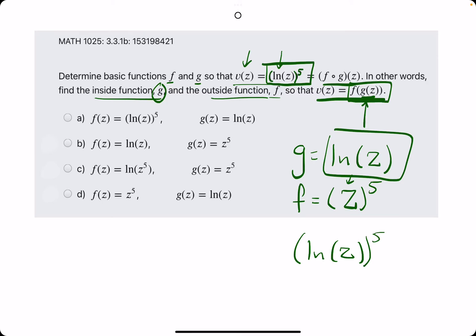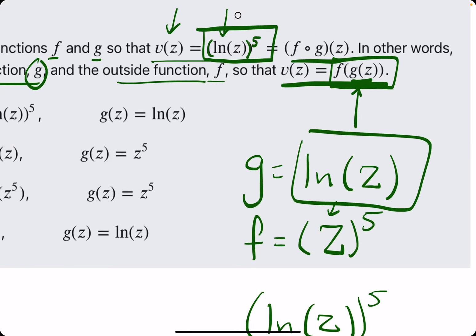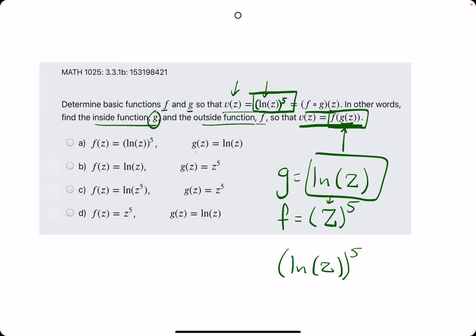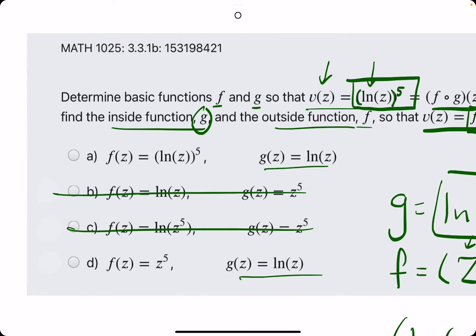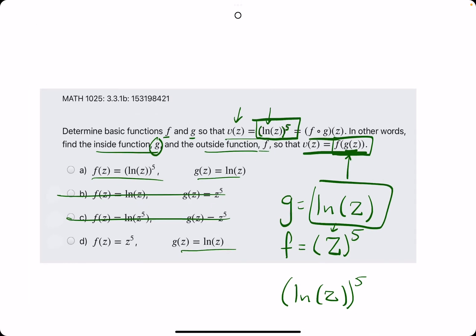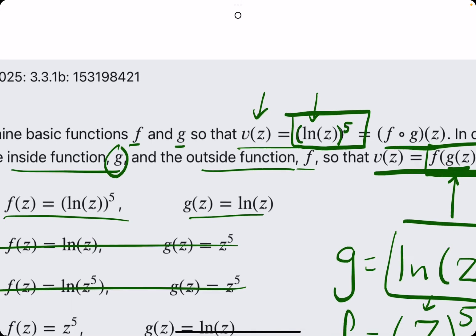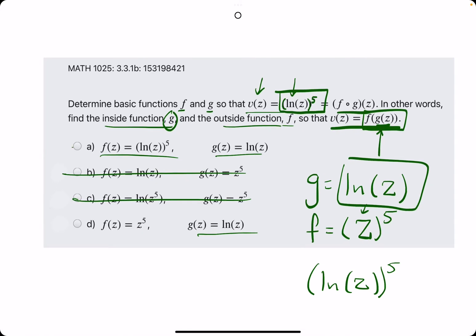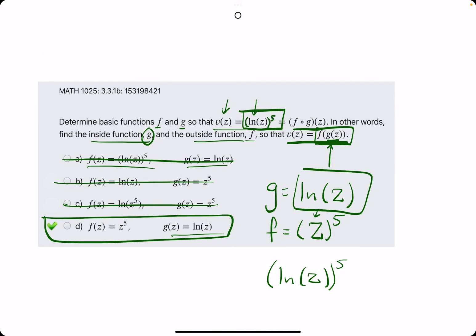I hope that makes sense, but generally again just pick the inside function, or identify the inside function first, so that'll help us eliminate options b and c. And then the function f should never match what the composite function is, so this option just doesn't make sense. So then breaking out the eraser, we get option d as our answer.